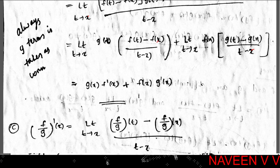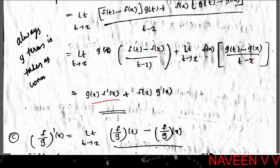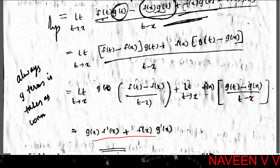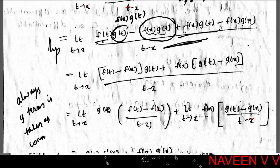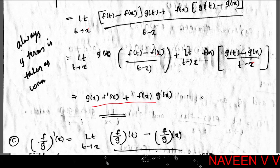Since limit t→x of [f(t) - f(x)] / (t - x) = f'(x) and limit t→x of [g(t) - g(x)] / (t - x) = g'(x), and since g is differentiable at x, by Theorem 5.2, limit t→x of g(t) = g(x), and f(x) is a constant. Applying these, the result is g(x)·f'(x) + f(x)·g'(x).